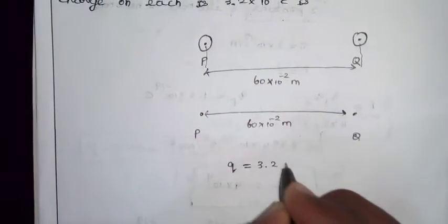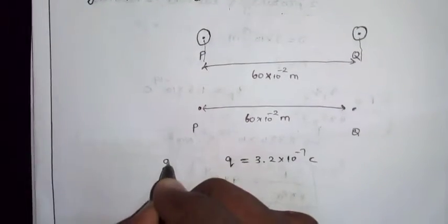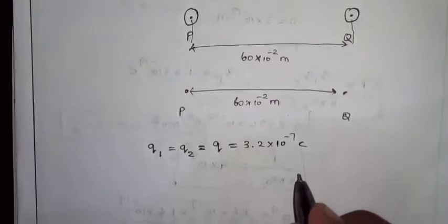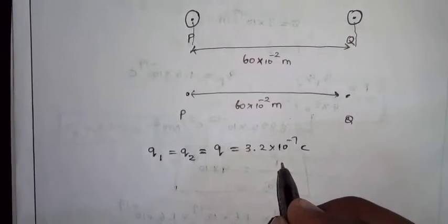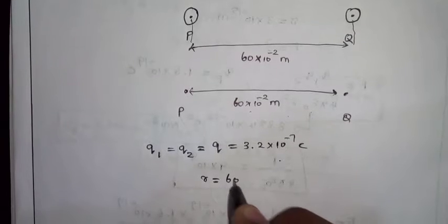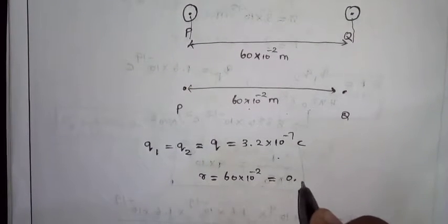Q is 3.2 into 10 power minus 7 C. The charge is the same. The distance is 60 centimeters, which is 0.6 meters.